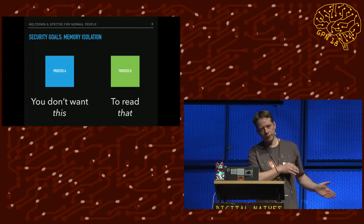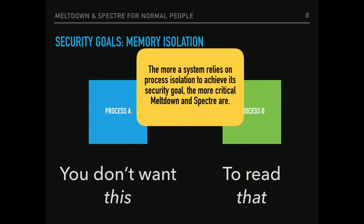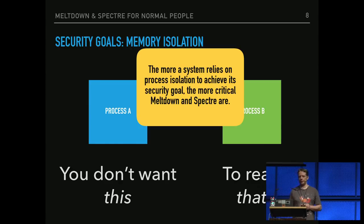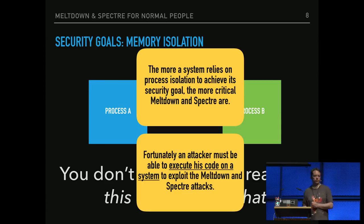There are some good sides to Meltdown and Spectre, and I will come to those. The first good or bad thing — it depends on your system. If your security strategy depends on this boundary, then you have a problem. If it doesn't depend on this boundary, you're fine. For example, a device that has an operating system and maybe processes running on it — Meltdown and Spectre is not a problem if process isolation is not the primary goal. The second good thing: you cannot directly execute Meltdown and Spectre remotely. You have to run code on the CPU. Unfortunately, JavaScript is also code that runs on the CPU.